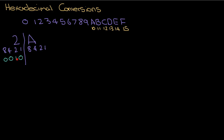See the video about binary conversion if you need to. Then for A — A has the value 10 — so how do I make the number 10? I need 1 eight, no 4s, 1 two, and no ones. So the conversion from hexadecimal 2A into binary is 0010 1010.